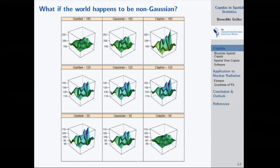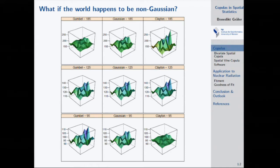For now, just take copulas as a concept to describe dependence. There is also a Gaussian copula, and it is exactly what we would do if we use a Gaussian distribution — so it's not an either/or. It's an extension of the Gaussian approach to different dependence structures.